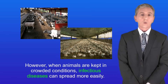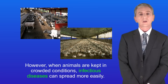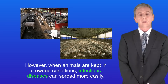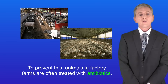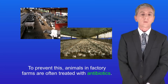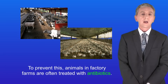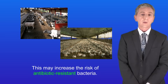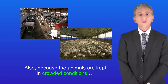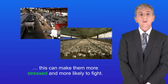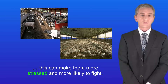However, when animals are kept in crowded conditions infectious diseases can spread more easily. To prevent this, animals in factory farms are often treated with antibiotics, and this may increase the risk of antibiotic-resistant bacteria. Also, because the animals are kept in crowded conditions, this can make them more stressed and more likely to fight.